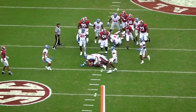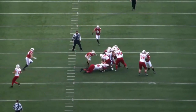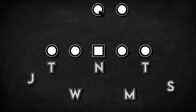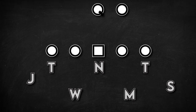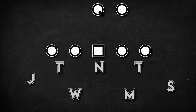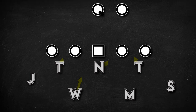But odd fronts aren't dead, and are actually having a little resurgence in the form of tight front defenses. Tight fronts are 3-down fronts where the 4-technique ends cheat inside the tackles to what's called a 4-inside or 4-eye technique, and the defenders one-gap much like they would in a 4-2-5.